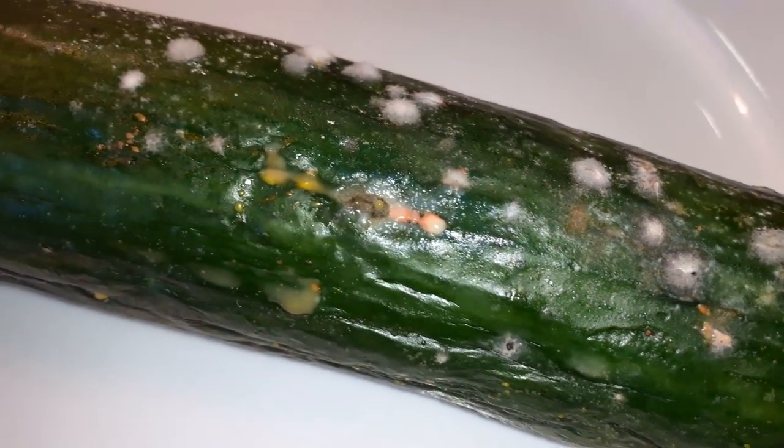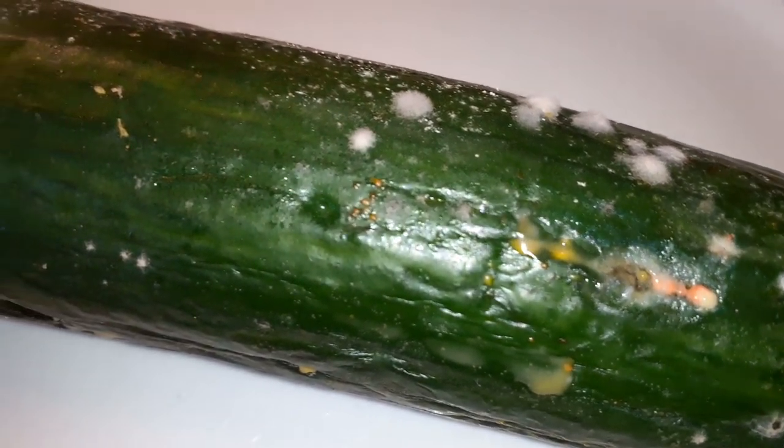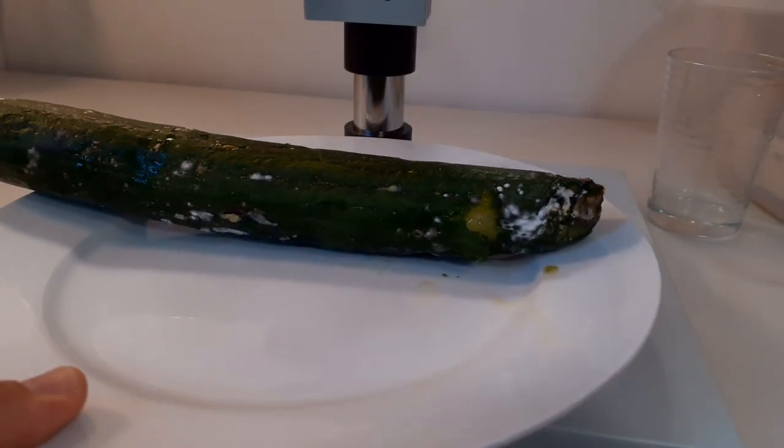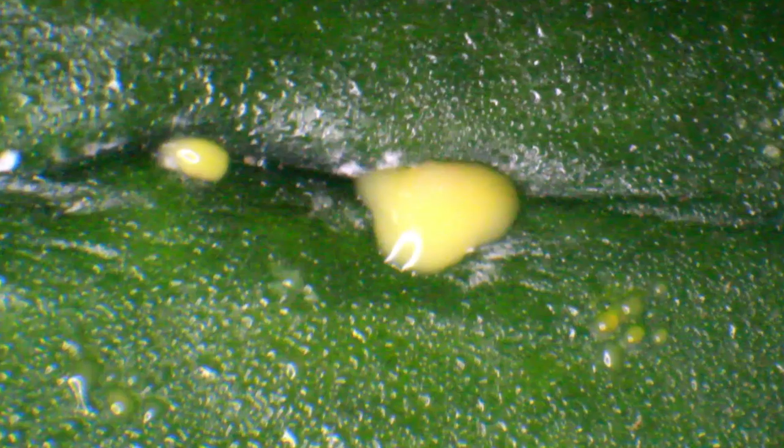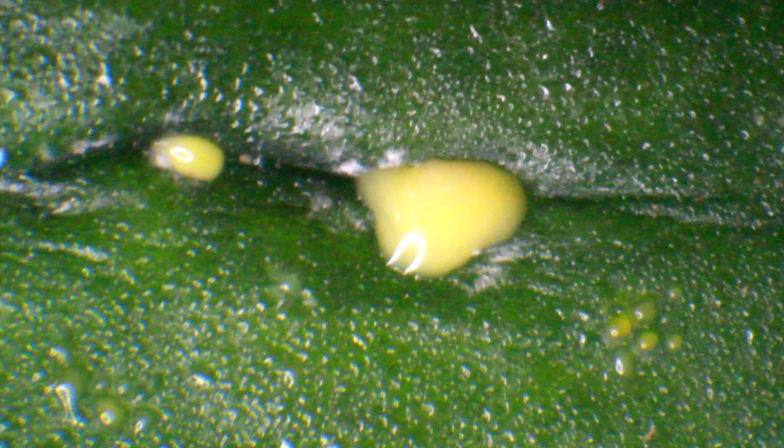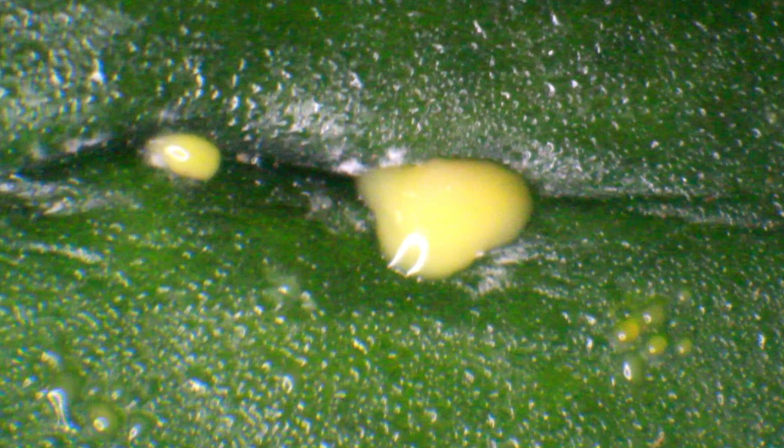Well there are hundreds of bacterial and fungal colonies growing on the cucumber. They have different colors and sizes and under the microscope we can see that the bacterial colonies they look shiny just like this one here and each colony contains billions of individual bacterial cells.